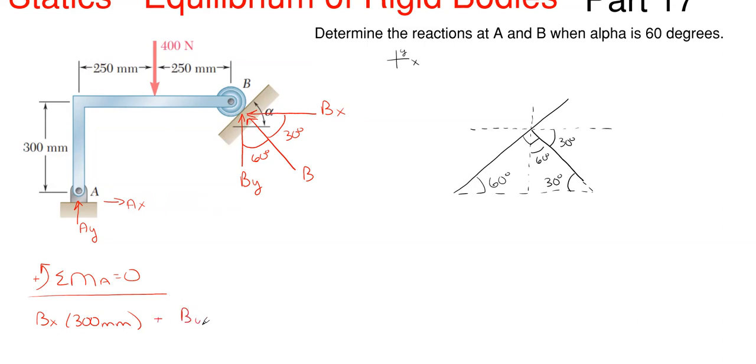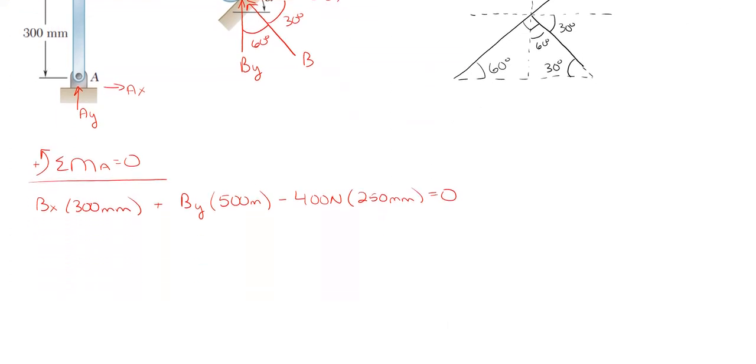So it's also positive B sub y times its perpendicular distance, which is 500 millimeters. And then subtracting off the 400 newtons, which would be rotating clockwise and its perpendicular distance, which is 250 millimeters to point A. So can't really solve for anything there. So might as well just write out the y and x equations and see if we can solve for anything there. And you're going to find out that no, we cannot solve with anything the way we have our equations written. We have to do an extra little step here.